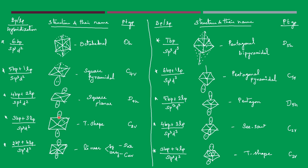If three lone pairs are present in SP3D2 (octahedral base), adding lone pairs in three positions gives a T-shaped structure, and T-shape means C2V. If four lone pairs are there, four positions become lone pairs and the structure becomes linear. For linear, check if symmetric — D∞H — or unsymmetric — C∞V. You should know the base structure and the number of lone pairs, draw it out, and identify the exact structure to write the correct point group.